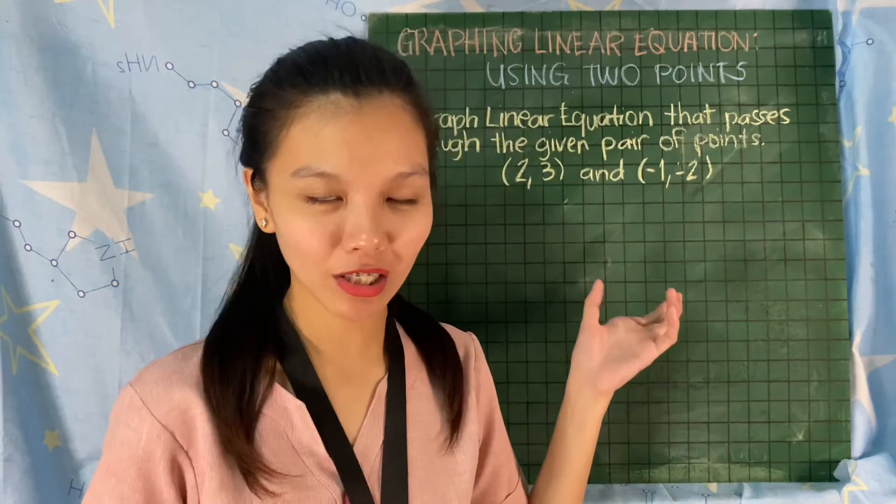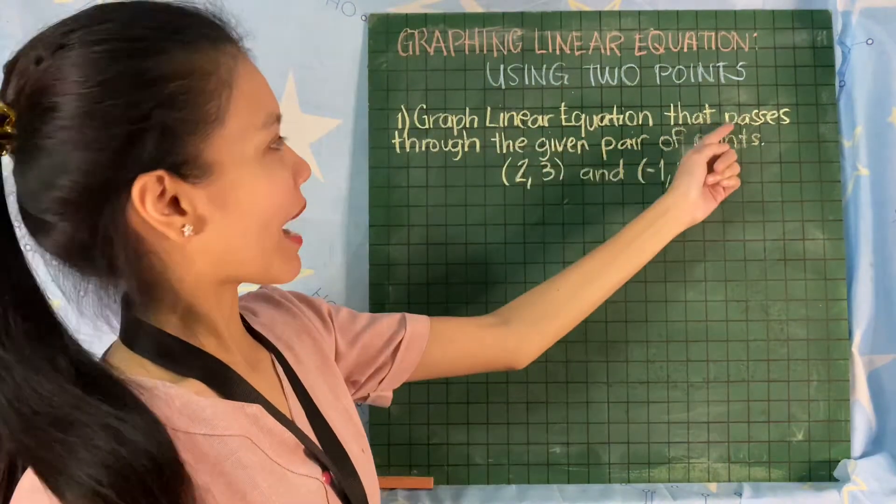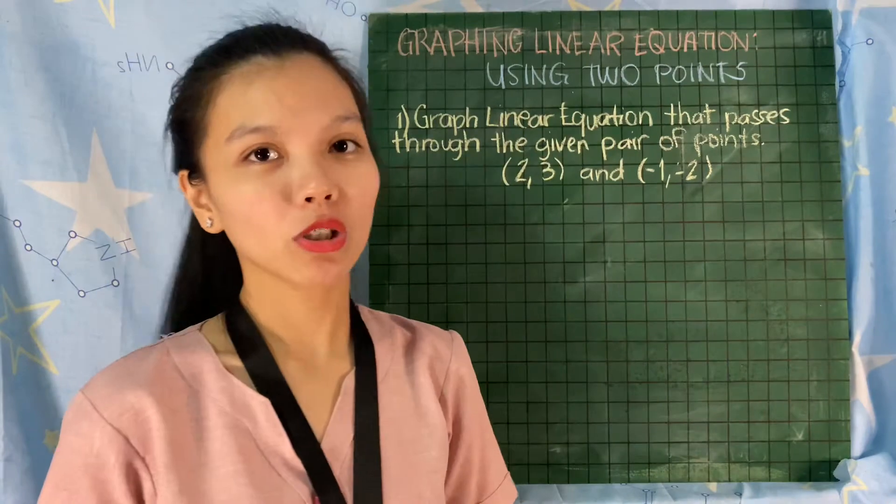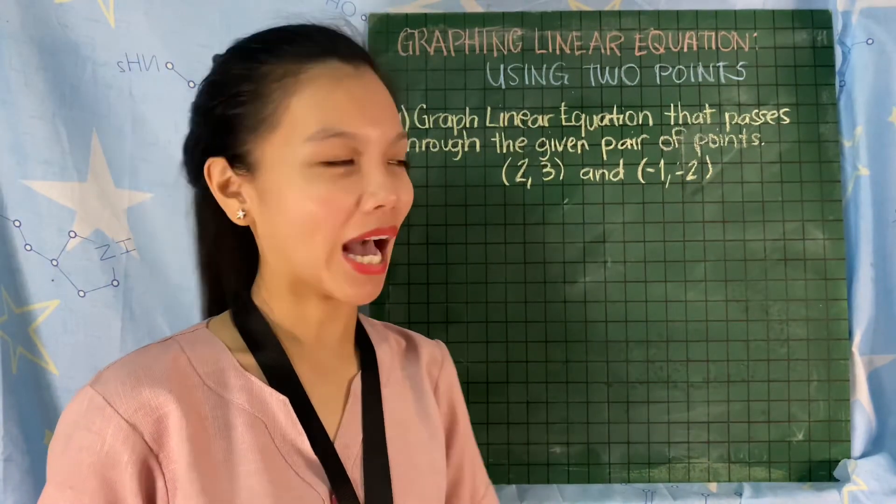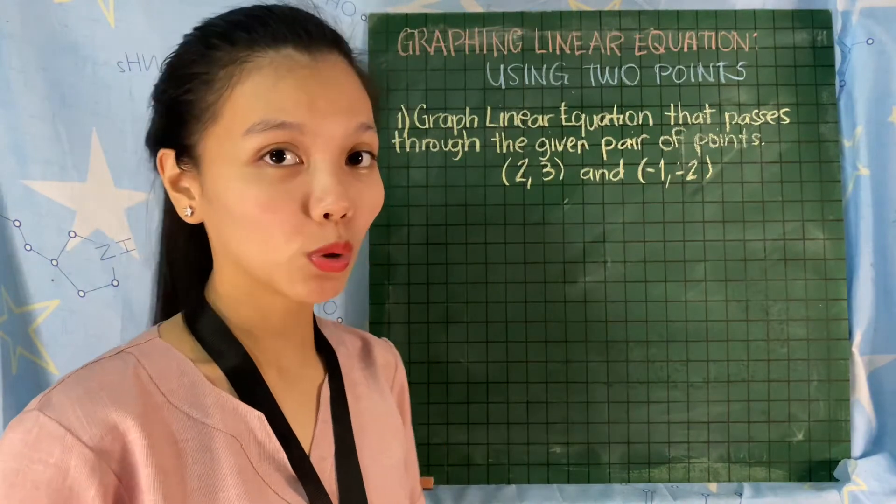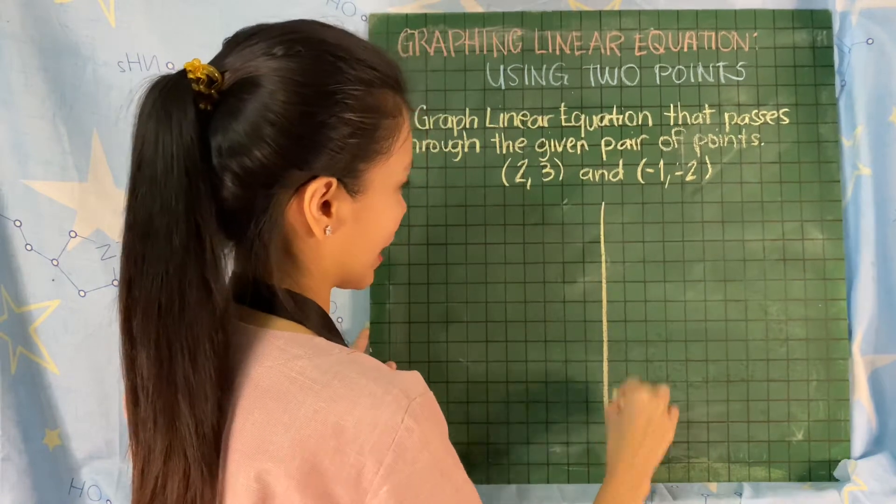We have here this situation: graph a linear equation that passes through the given pair of points. What are those two points? We have 2, 3 and -1, -2. First, you are going to make a Cartesian plane.